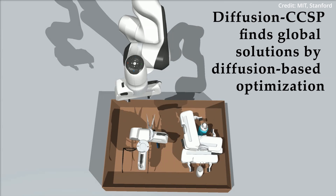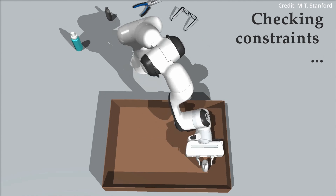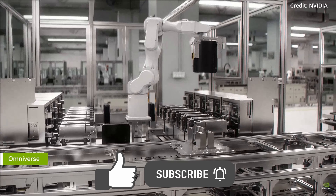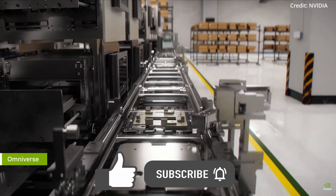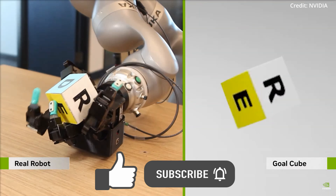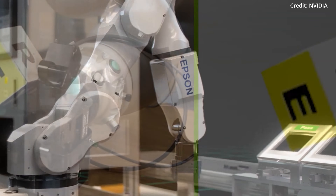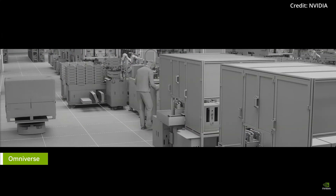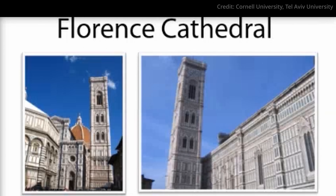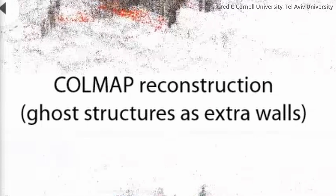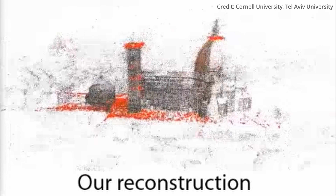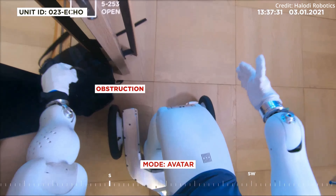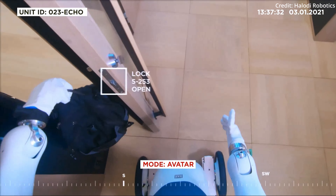Introducing Diffusion CCSP, a brand new AI framework that just unleashed robots' decision-making skills to reach unprecedented heights in manipulation and generalization. Layer this on top of the next frontier in computer vision with AI doppelgangers and you don't have just another incremental improvement, but a breakthrough that's already outshining baseline methods in several challenging domains.